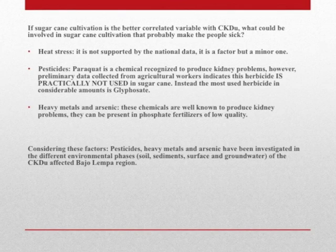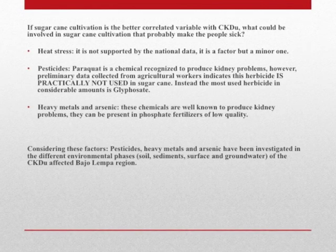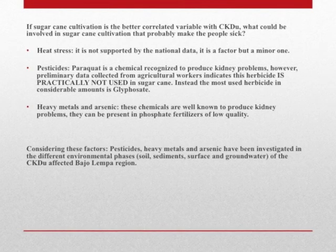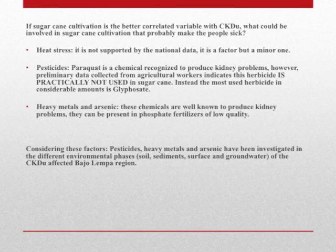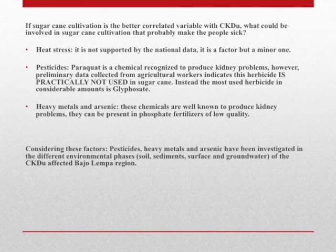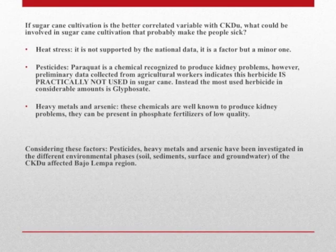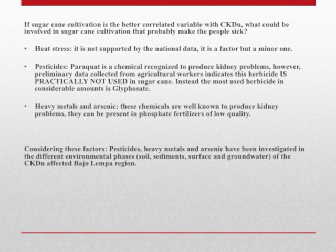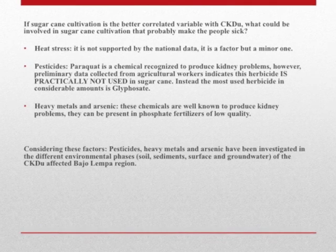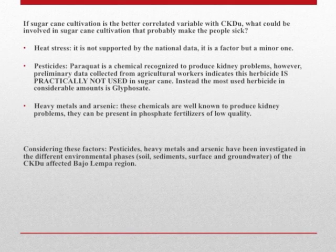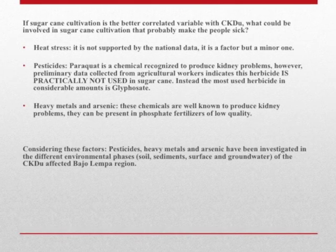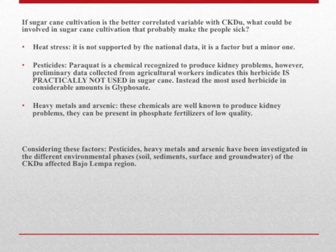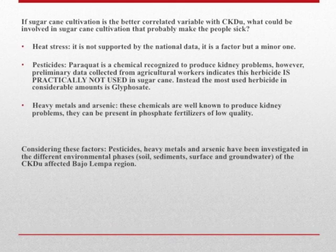Pesticides? Paraquat is a chemical recognized to produce kidney problems. However, preliminary data collected from agricultural workers indicates this herbicide is practically not used in sugarcane. Instead, the most used herbicide in considerable amounts is glyphosate. Heavy metals and arsenic? These chemicals are well known to produce kidney problems and can be present in low-quality phosphate fertilizers. Considering these factors, pesticides, heavy metals, and arsenic have been investigated in different environmental phases — soil, sediment, surface water, and groundwater — of the CKD-affected Bajo Lempa region.